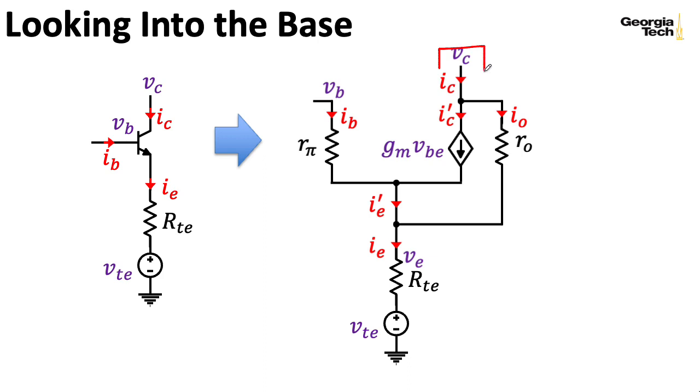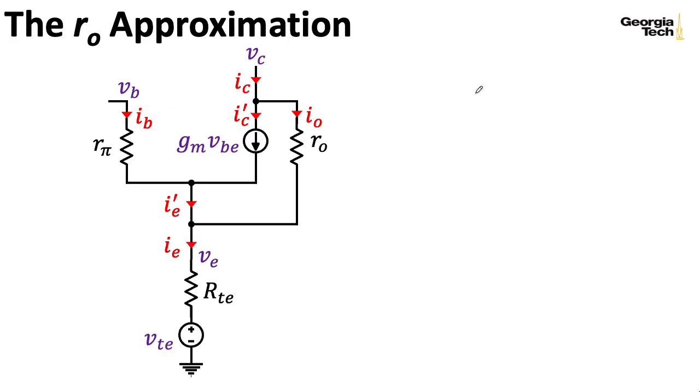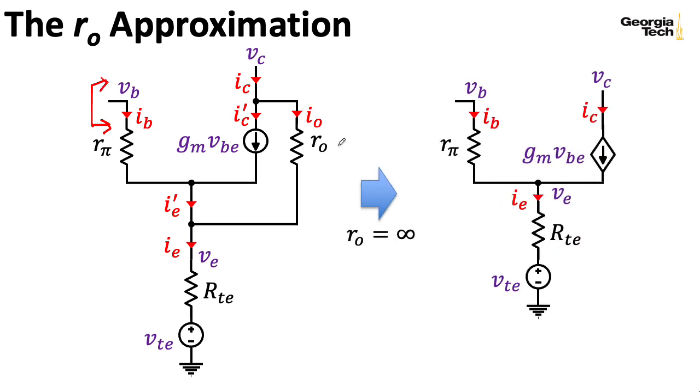Now in the last lecture, when we computed the Norton equivalent circuit looking into the collector, we used the R0 approximation when computing the Norton current, but we didn't use it when computing the Norton resistance. Here, we're going to use the R0 approximation for everything. We're going to use it to compute the Thevenin voltage, and we're going to use it when we're computing the Thevenin resistance looking into the base here. So we're going to assume that R0 is infinite. So R0 here essentially goes away, and I0 here is zero. This simplifies what we're doing here tremendously.